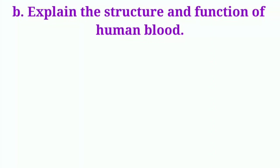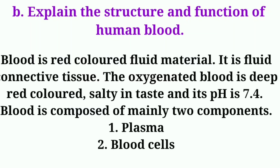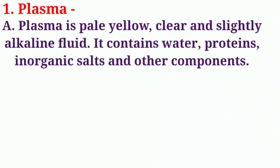Explain the structure and function of human blood. Blood is a red-colored fluid material; it is a fluid connective tissue. Oxygenated blood is deep red colored, salty in taste, and its pH is 7.4. Blood is composed of mainly two components: one – plasma, two – blood cells.